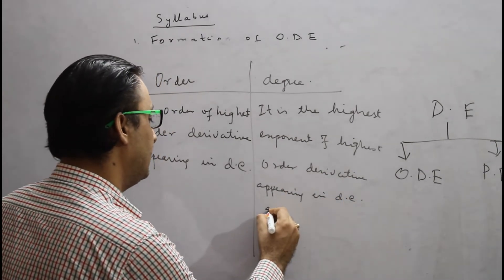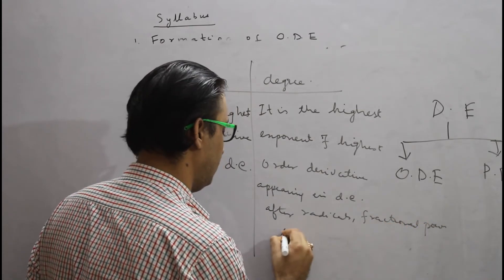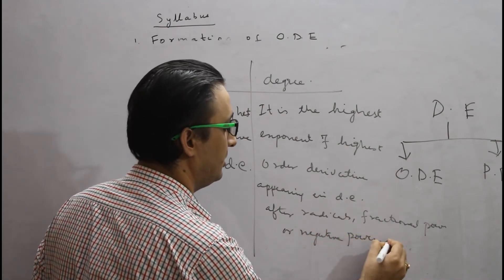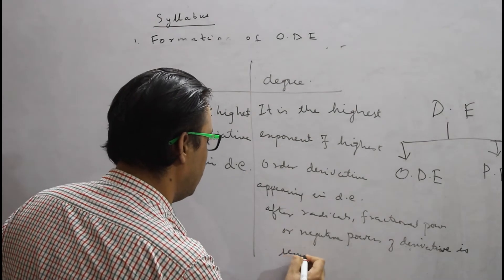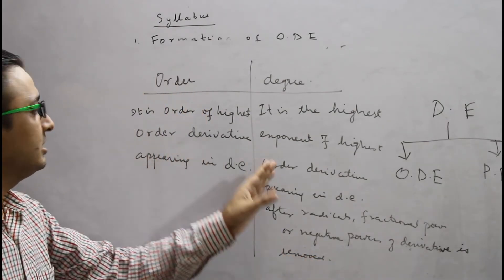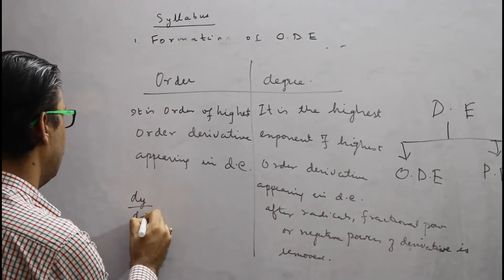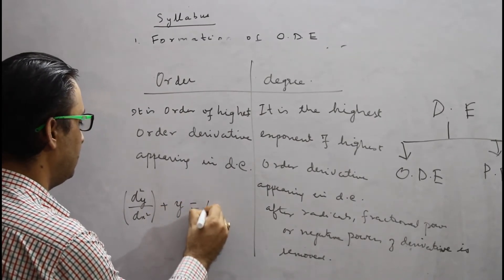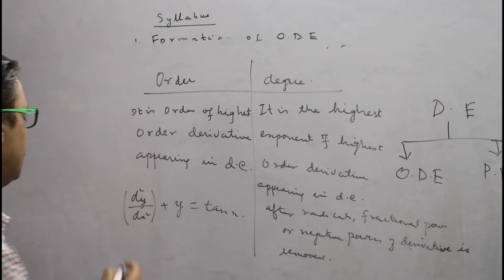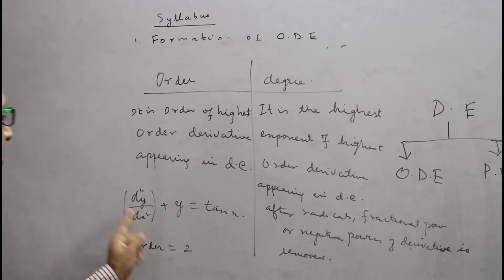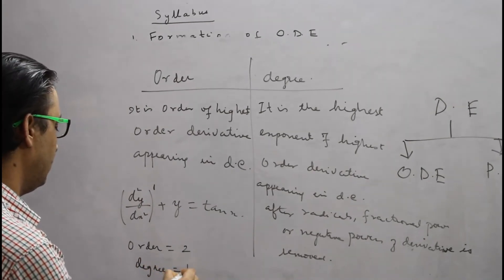There is a caveat regarding degree: after radicals and fractional powers of the derivative are removed. For example, if we have d²y/dx² + y = tan(x), the order is 2 (highest order derivative), and the degree is 1 (the exponent of that derivative is 1).